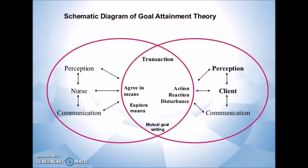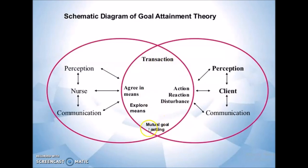This is a schematic representation of the goal attainment theory. The perception and communication of the nurse and the perception and communication of the client interact together. When they interact, transaction occurs, mutual goal setting occurs, and they both explore and agree to achieve the mutual goal set by them.